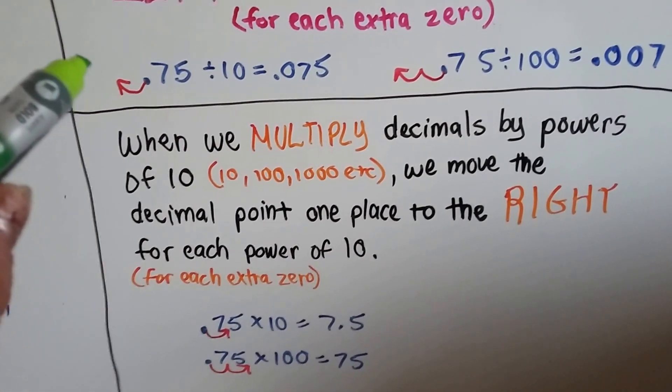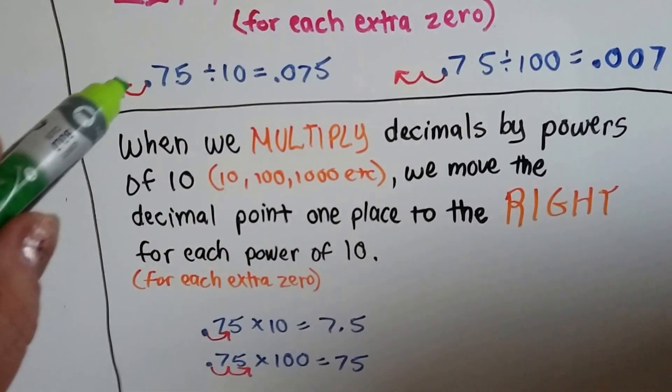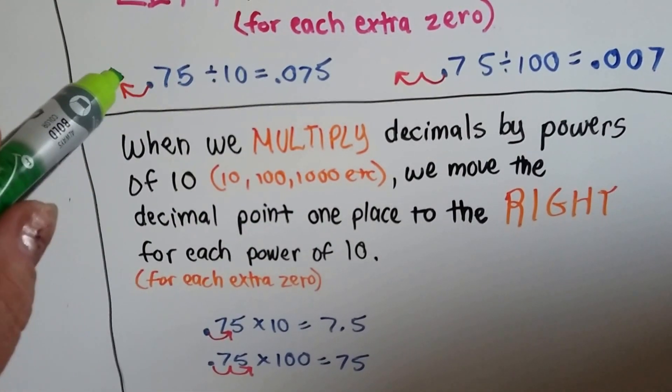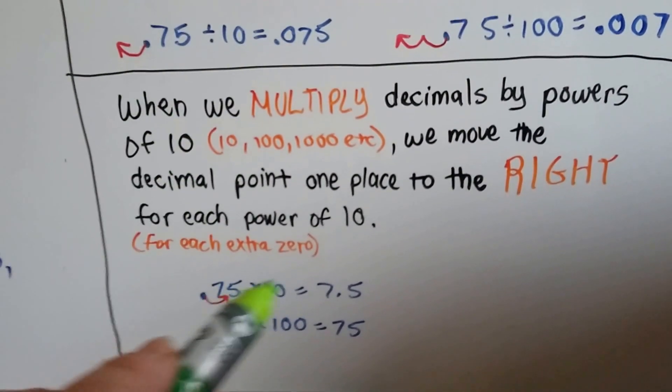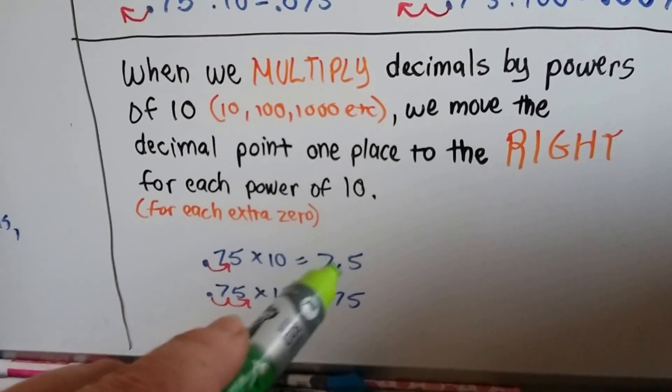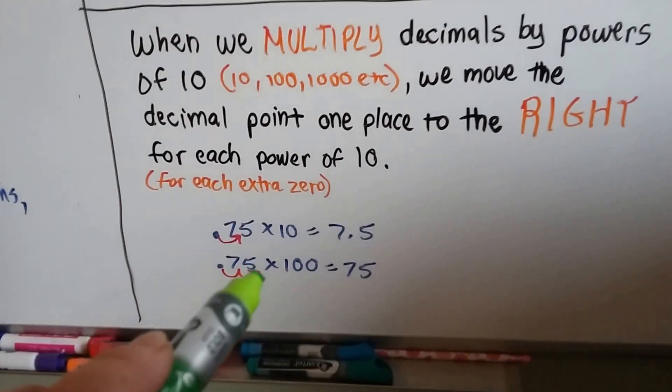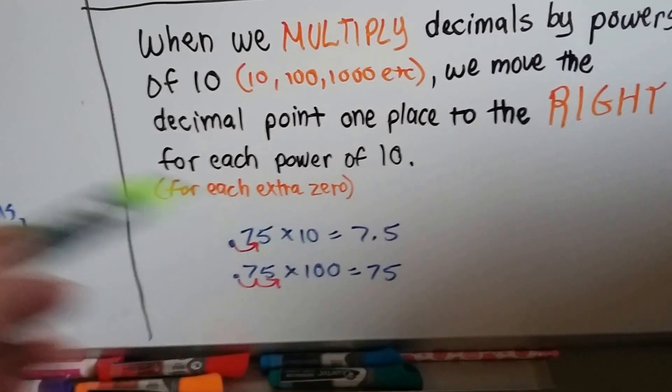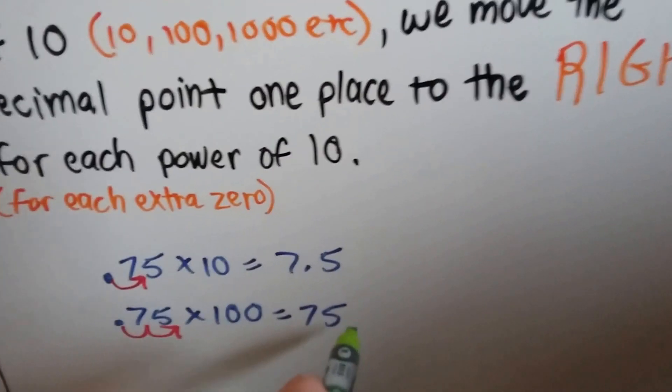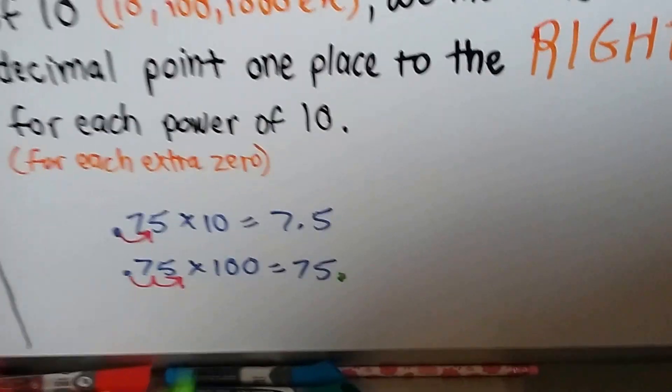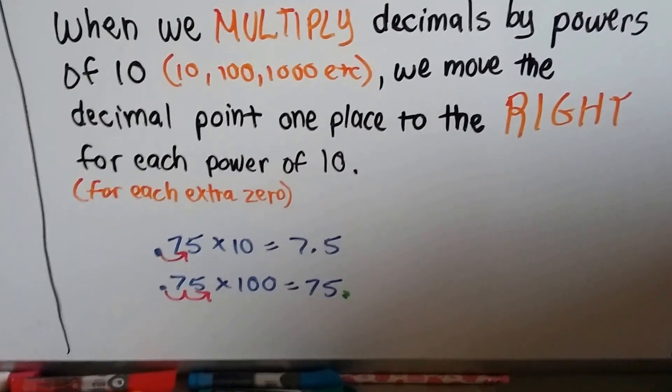See here, the decimal point moved farther left and it became smaller. It went from 75 hundredths to 75 thousandths. But here, it's becoming bigger. Now it's 7 and 5 tenths. And if we multiply .75 by 100, it becomes just 75. Because now, the decimal point is back here. So, it became a full 75.